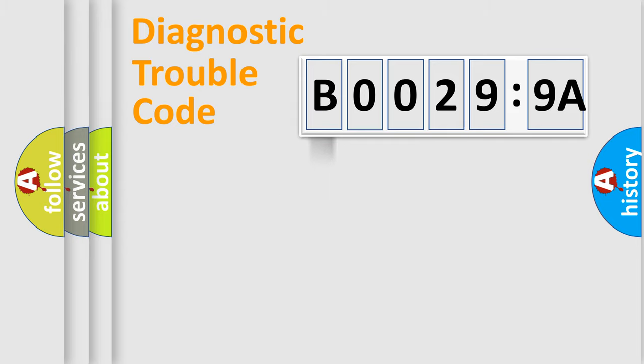Powertrain, body, chassis, network. This distribution is defined in the first character code.